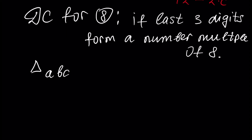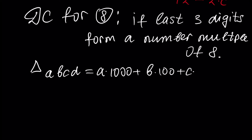Let's prove it. Assume we have number ABCD, which equals A times 1000 plus B times 100 plus C times 10 plus D times 1. This element — A times 1000 — is divisible by 8 because 1000 equals 125 times 8.